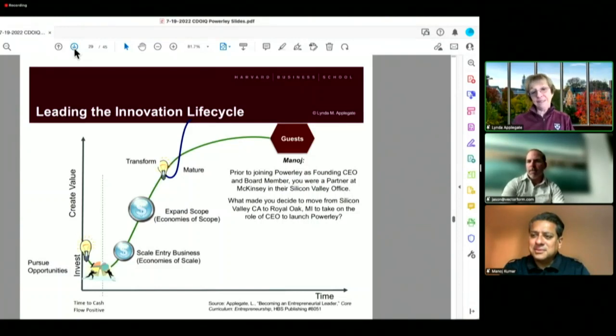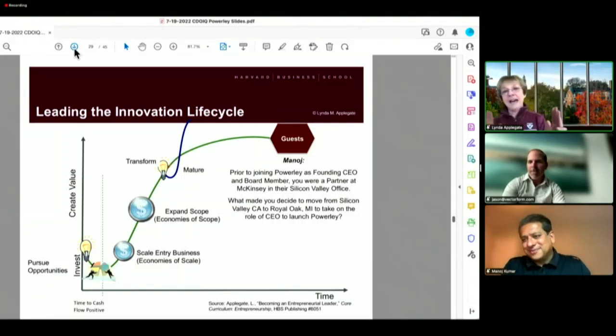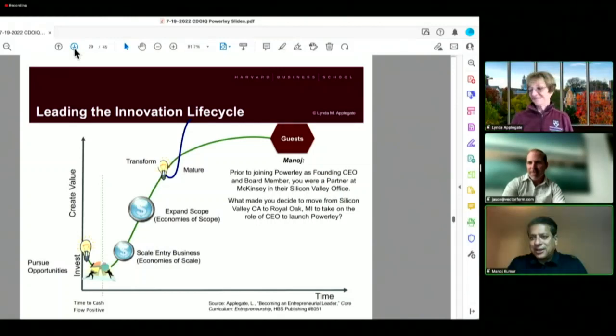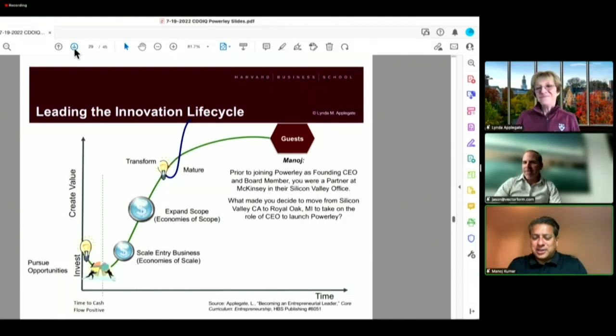Manoj, prior to joining Powerly as founding CEO and board member, you were a partner at McKinsey in their Silicon Valley office. Now, I have to start by saying, what made you decide to move from Silicon Valley, California to Royal Oak, Michigan to take on the role of CEO to launch Powerly? Most people weren't moving in that direction back then. Well, definitely, all those decisions were questioned by my friends.